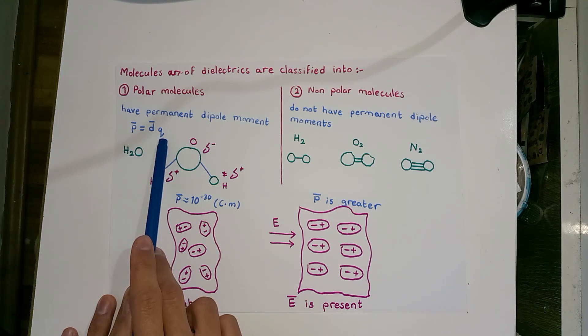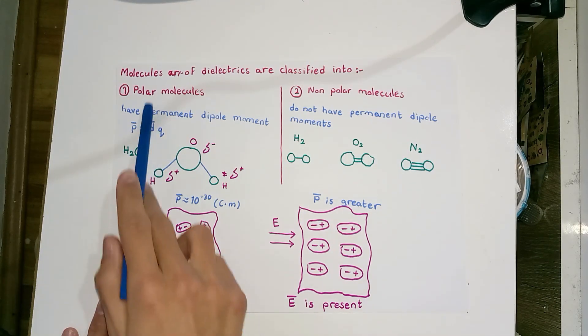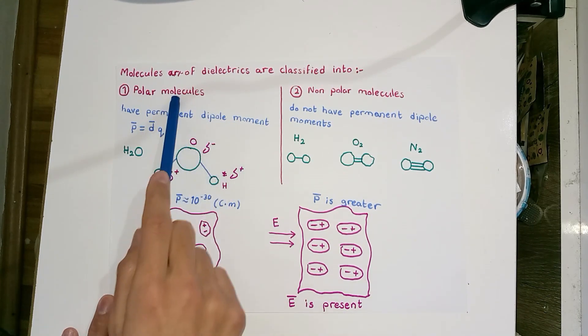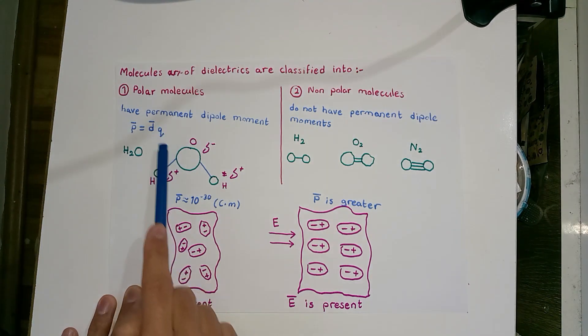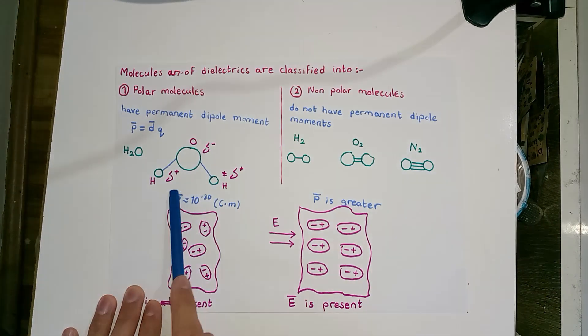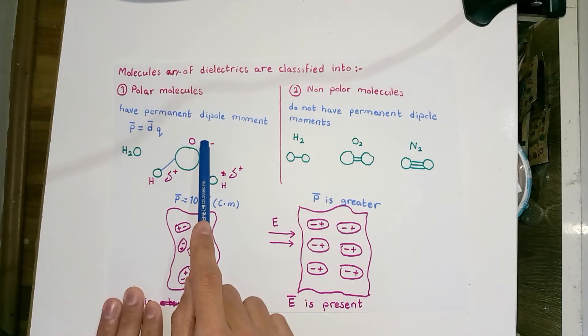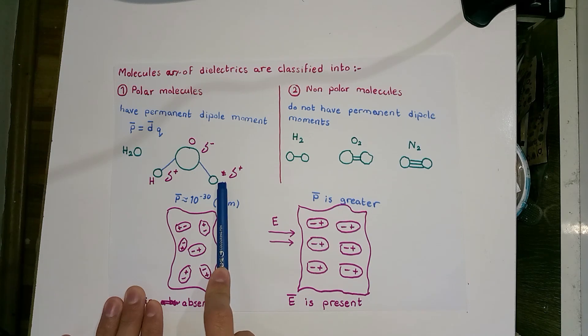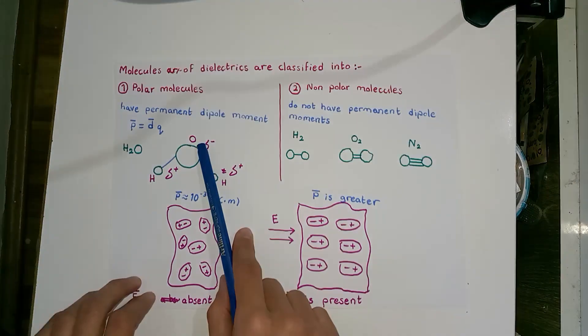These molecules which have permanent dipole moments are known as polar molecules. The reason behind the existence of permanent dipole moments inside these polar molecules is the difference of electronegativity between the bonded atoms. For instance, the water molecule H2O is polar because of the difference in electronegativity between hydrogen and oxygen. The hydrogen is partially positive and the oxygen is partially negative, so the H2O molecule is already a dipole.